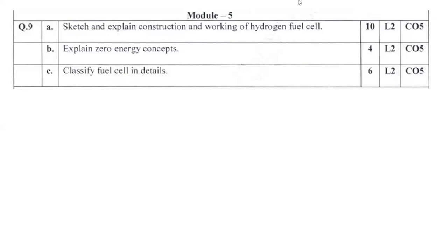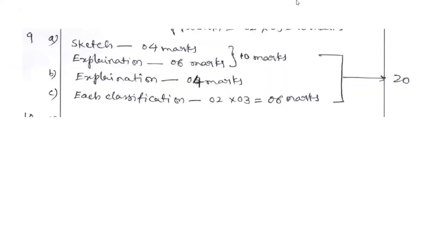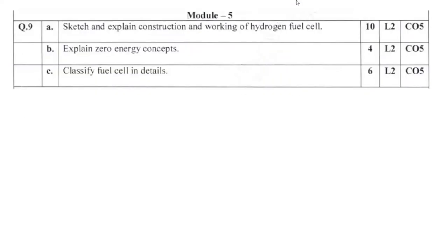Question 9A: sketch and explain construction and working of hydrogen fuel cell. Anodic reaction, cathodic reaction, overall reaction. Draw simple schematic diagram with chemical equations. Question 9B: explain zero energy concepts, 4 marks, very simple. Classify fuel cells in detail: PMC fuel cell, hydrogen fuel cell, and many varieties of classifications. Brief explanation with classification, better draw flow charts.